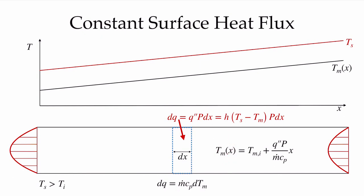The mixed mean temperature distribution is a linear increase from the inlet mixed mean temperature, adding q'' times the perimeter area over m-dot c_p. So we can easily calculate this linear increase in mixed mean temperature in the fully developed region under a constant heat flux boundary condition.